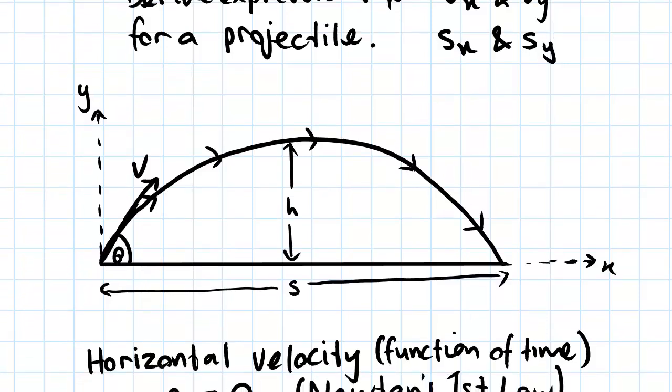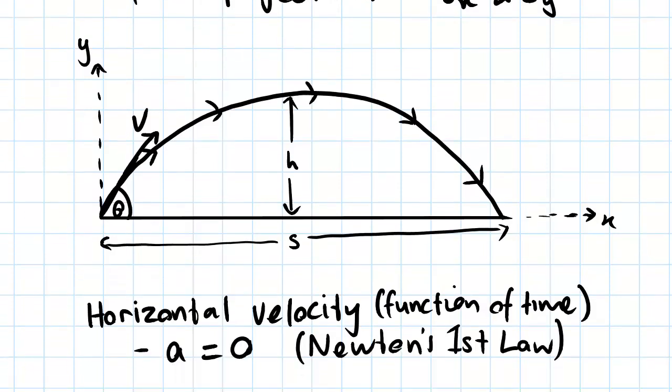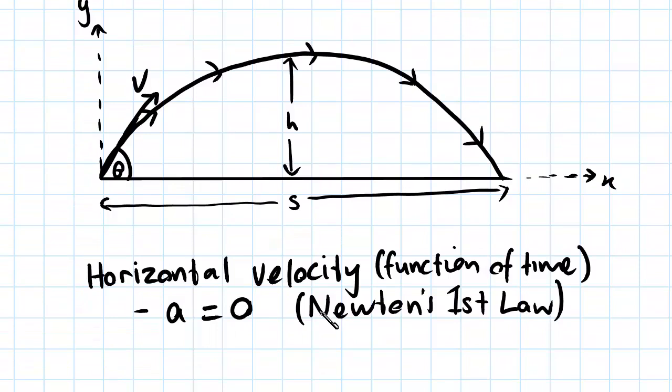So we'll start off by looking at the horizontal components. This is the easy bit, the horizontal component, because when we consider horizontal velocity as a function of time, we know that the acceleration in the x direction is equal to zero.